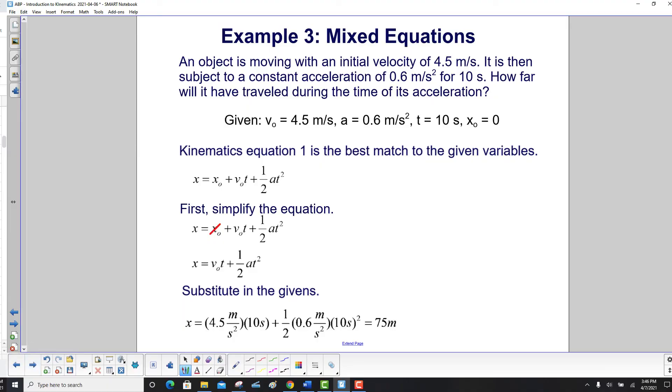We need to find the displacement, right, and the displacement is going to be final position minus initial position. So just to do a shortcut here, we assume that x0 is equal to 0, and we have that over here. So really we're finding x, and that equation would be the, excuse me, the second kinematics equation.